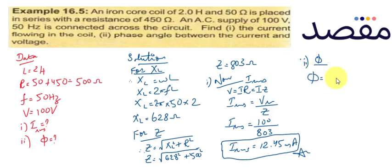Now moving to the second part, we have phase angle phi which equals tan inverse of XL divided by R. We have values here, XL and R.